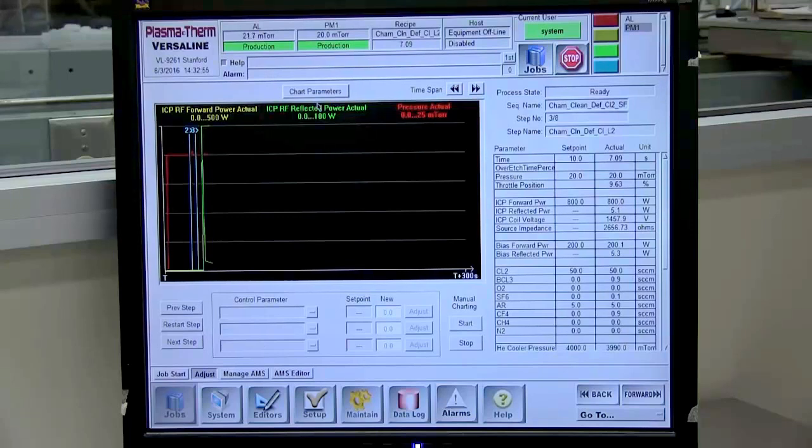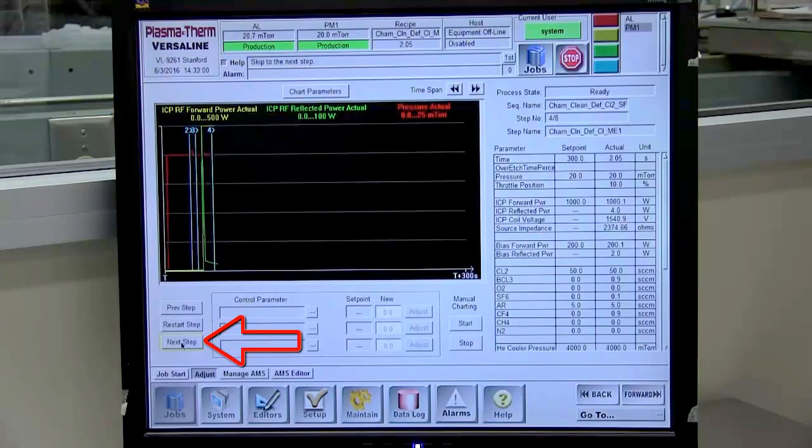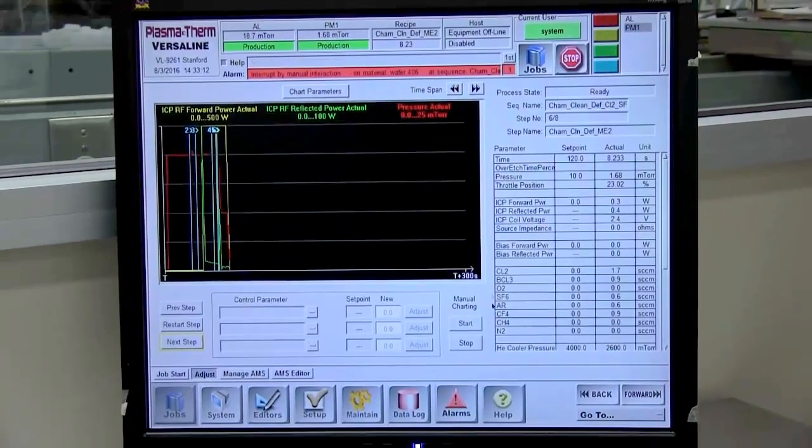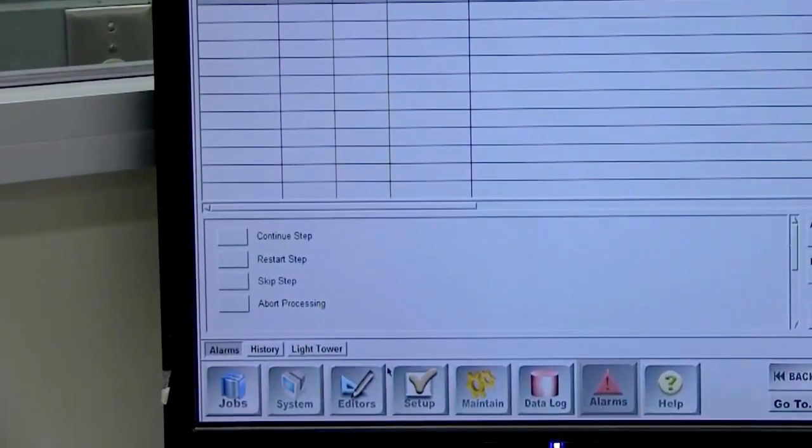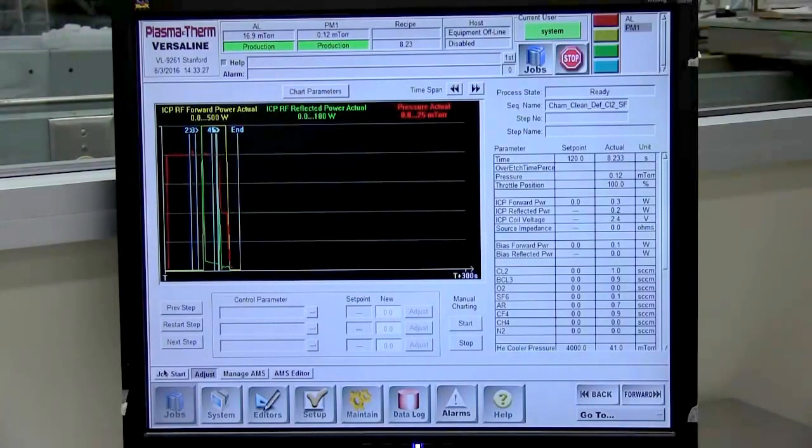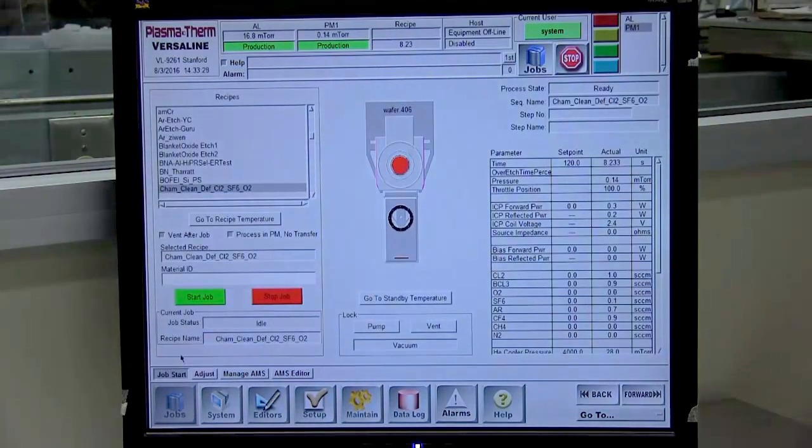In case the processing has to be aborted, click the Command button Next Step in the Job / Adjust screen as many steps as needed. Alternatively, press the Stop button in the top menu bar. This will stop the process and give an alarm, and selecting abort process from the alarm screen will get the wafer out. Do not use the Stop Job button located near the bottom left of the screen as this occasionally hangs up the machine.